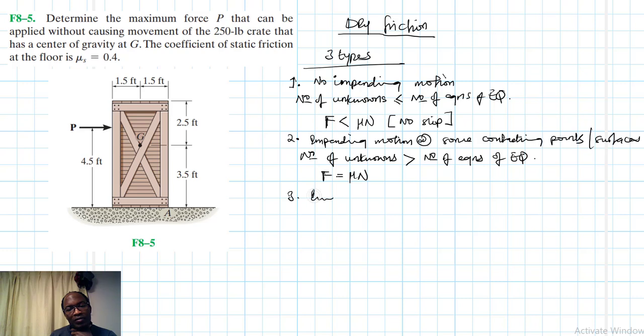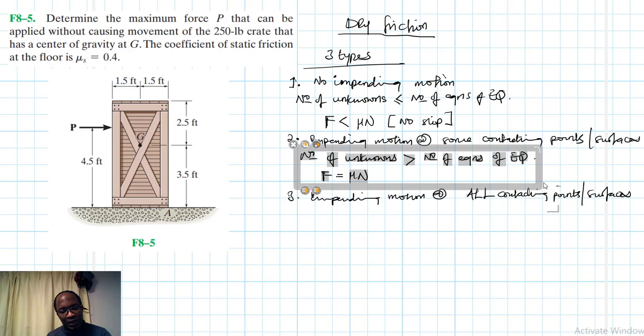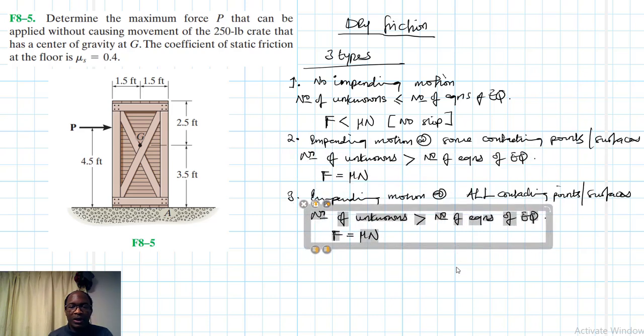The third one is where we have impending motion at all points, at all contacting points or surfaces. In this particular case, this again applies. The number of unknowns are greater than the number of equations of equilibrium. And here we are also forced to invoke the friction equation.